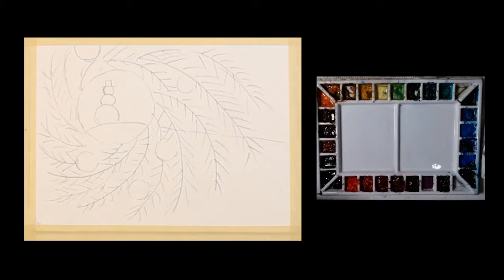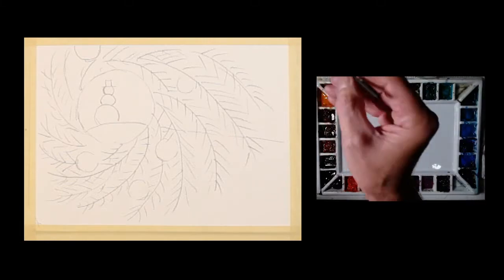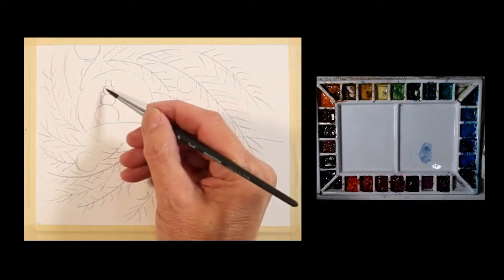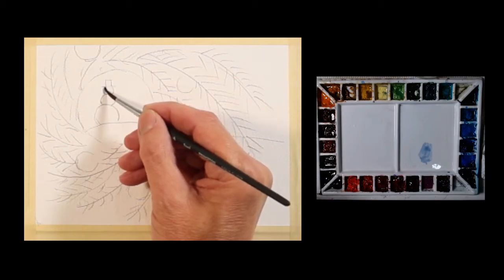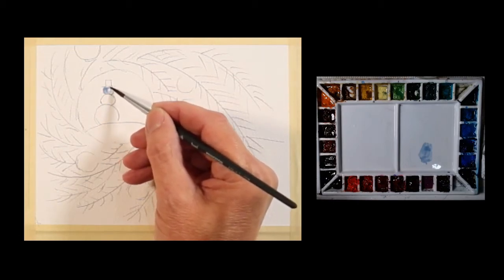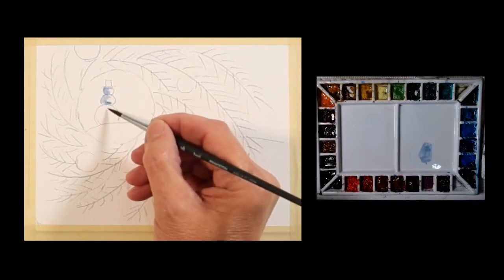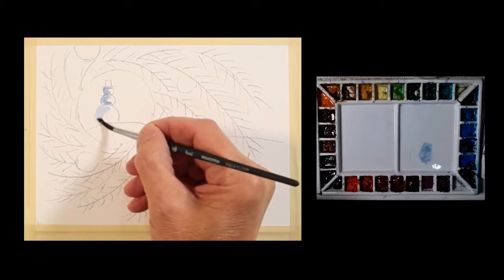I'm going to start by painting this snowman. I'm going to use royal blue, but I have not a lot of pigment in there, quite a bit of water. And I'm going to paint some shadows on this snowman. I'm not going to get real detailed or anything on this.